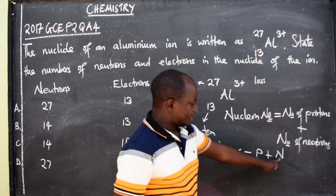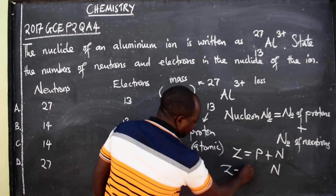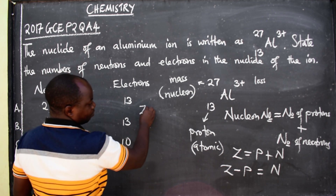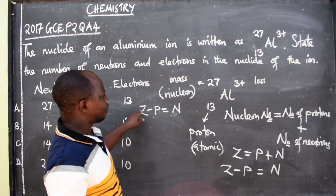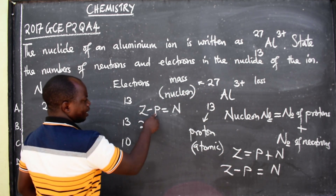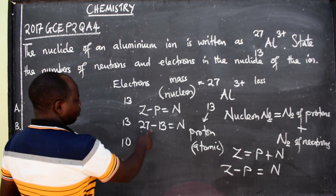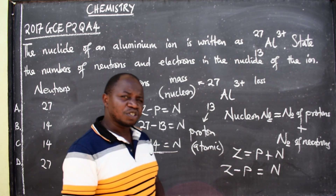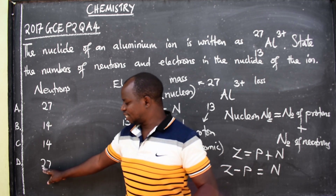The number of neutrons N: making N the subject of the formula gives us N = A minus P, that is z minus p equals n. Z is the mass number which is 27, and the proton number is 13. So 27 minus 13 gives us N equal to 14. The number of neutrons is 14. This eliminates options A and D, leaving us with B and C.